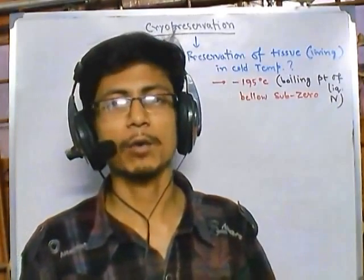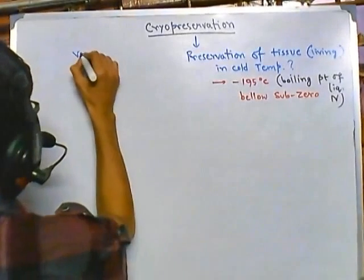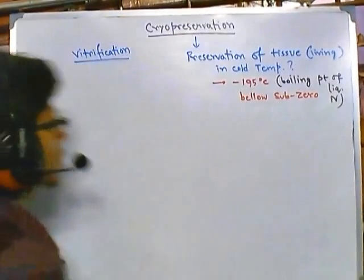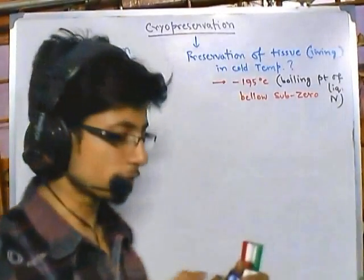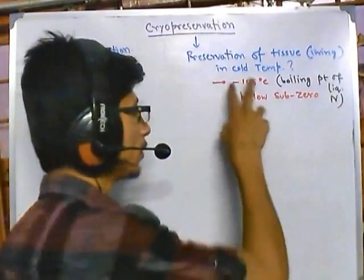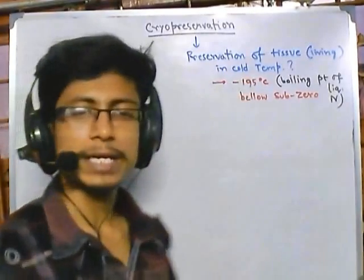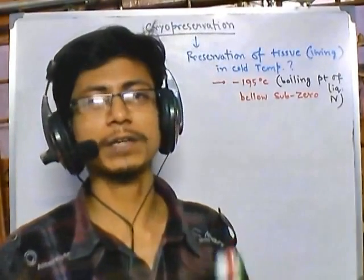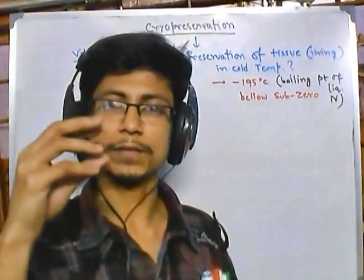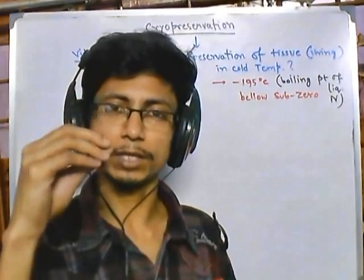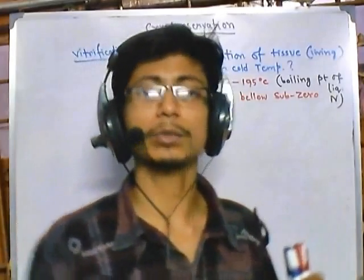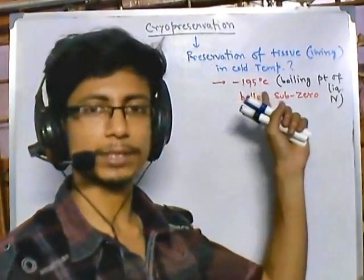Another question — one that CSIR NET people can ask — is: what is vitrification? One important thing about cryopreservation is that once you put tissue into that very low temperature, there is a chance of water crystal formation in your tissue. When water forms crystals, it expands in solid or ice form, which can burst your cells. For that reason, we need to rapidly freeze them at this temperature.